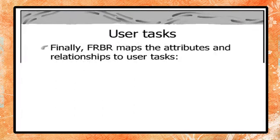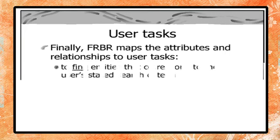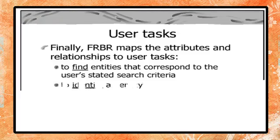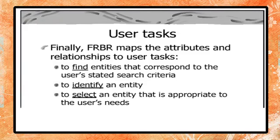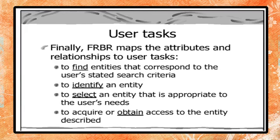As mentioned at the beginning, a user comes to the library for four tasks identified by the International Cataloguing Principles formulated by IFLA in 1998: to find an entity, to identify an entity, to select an entity, and to obtain an entity. FRBR maps these attributes and relationships to these user tasks.